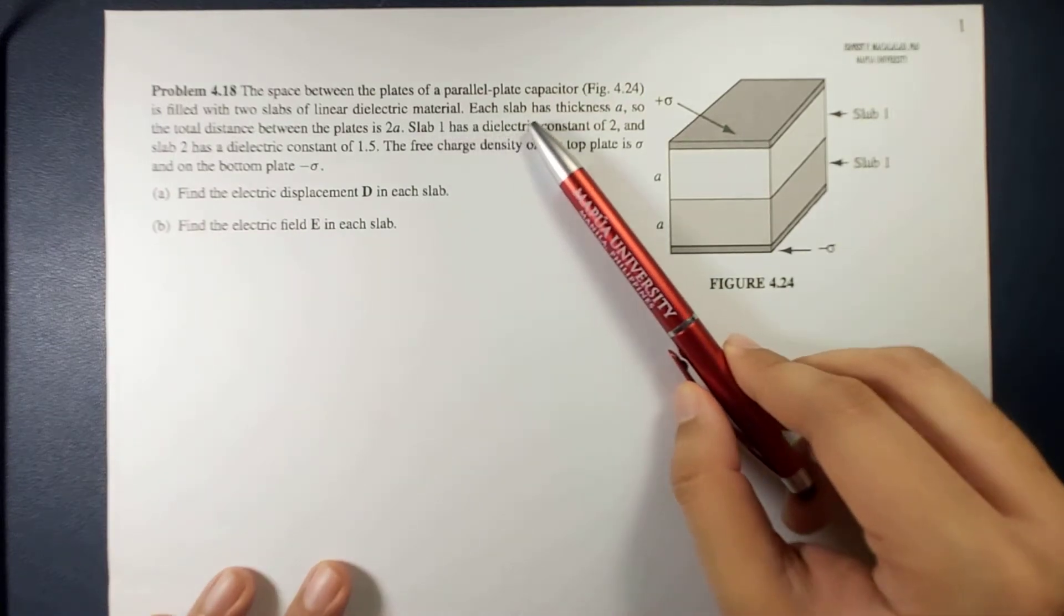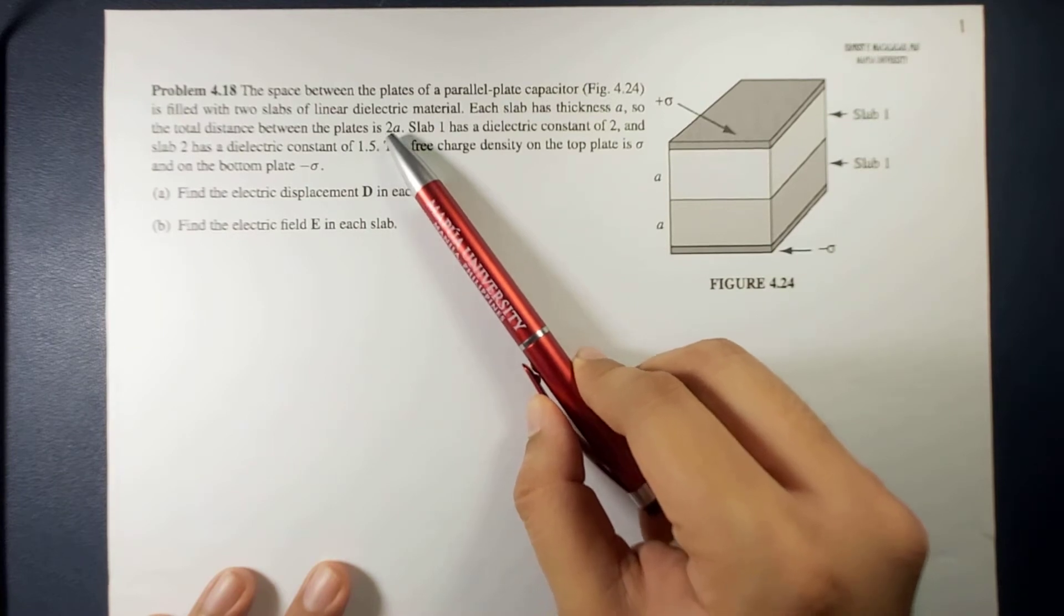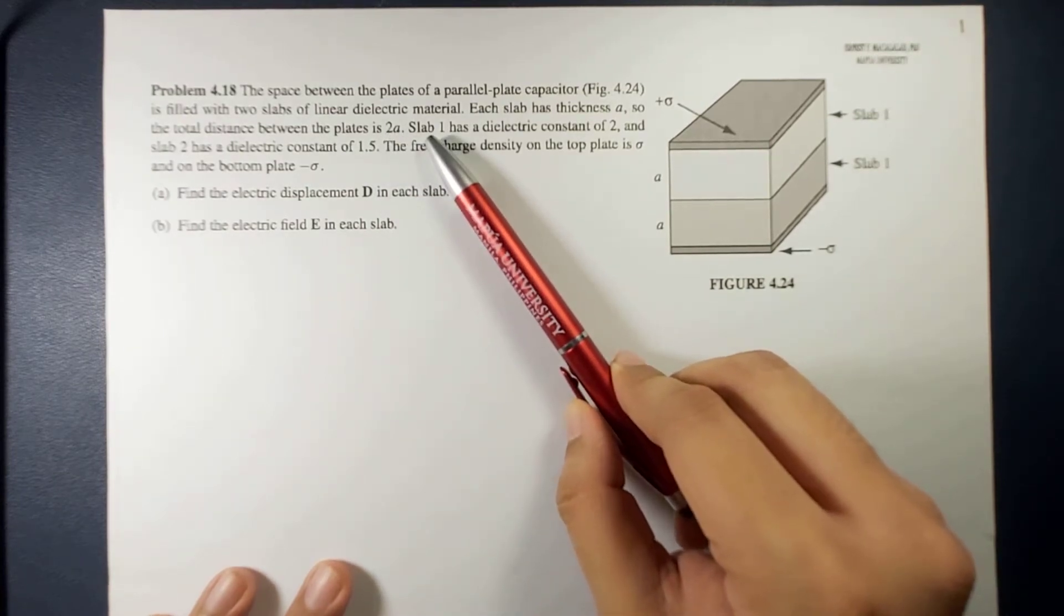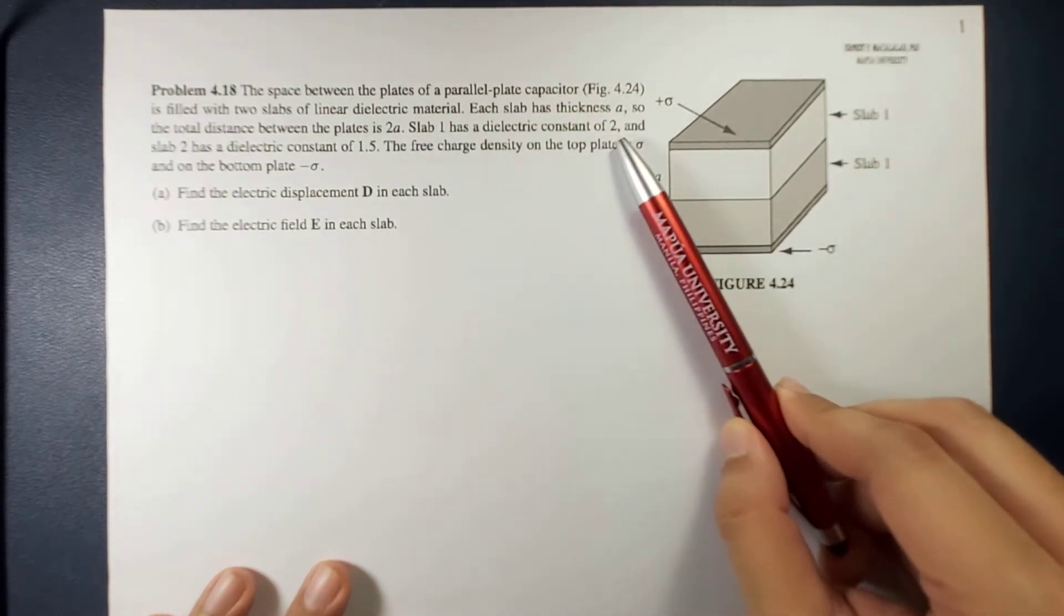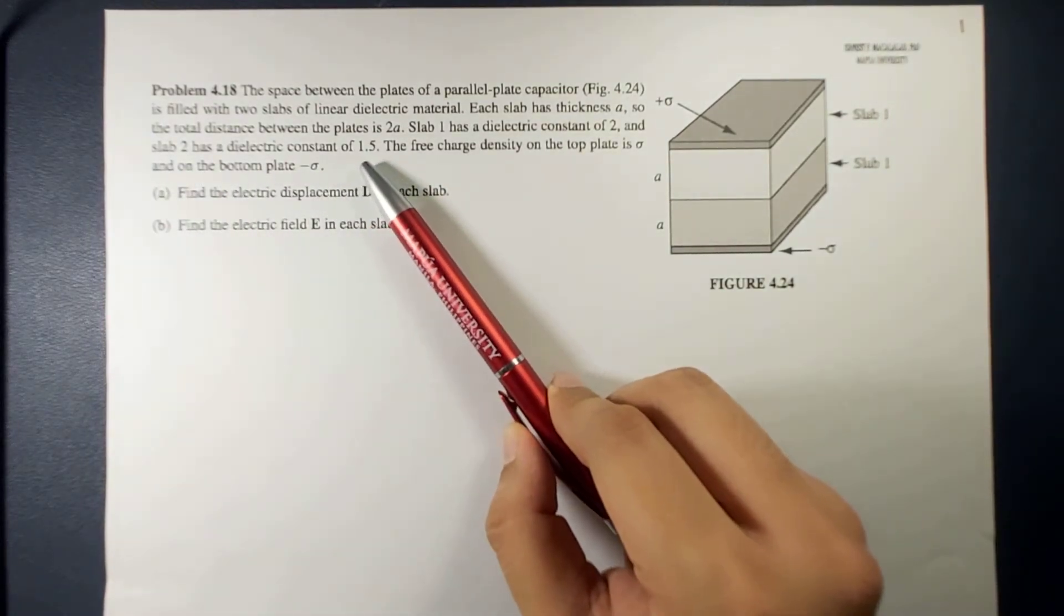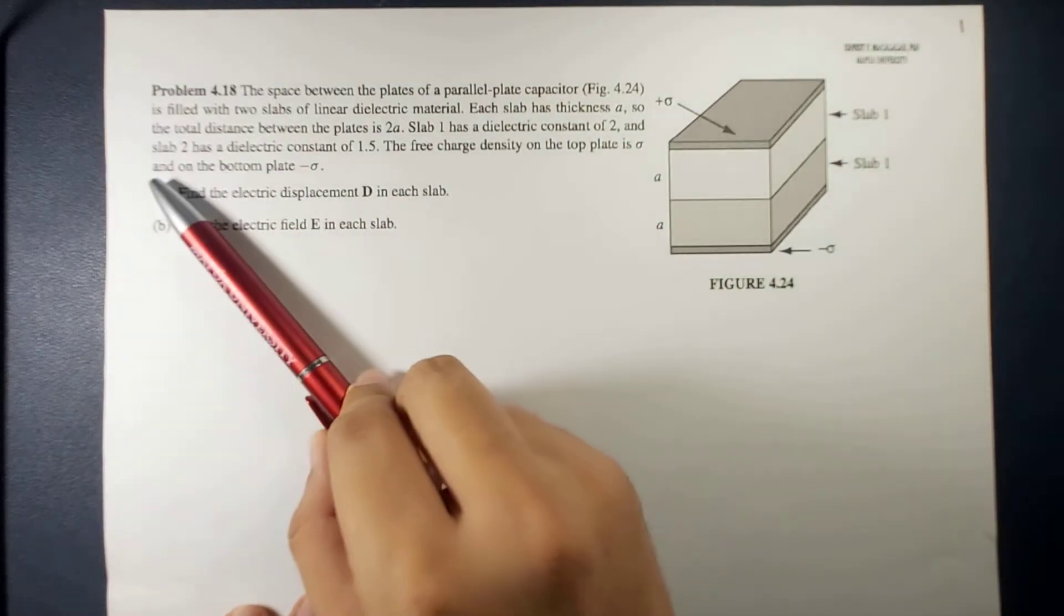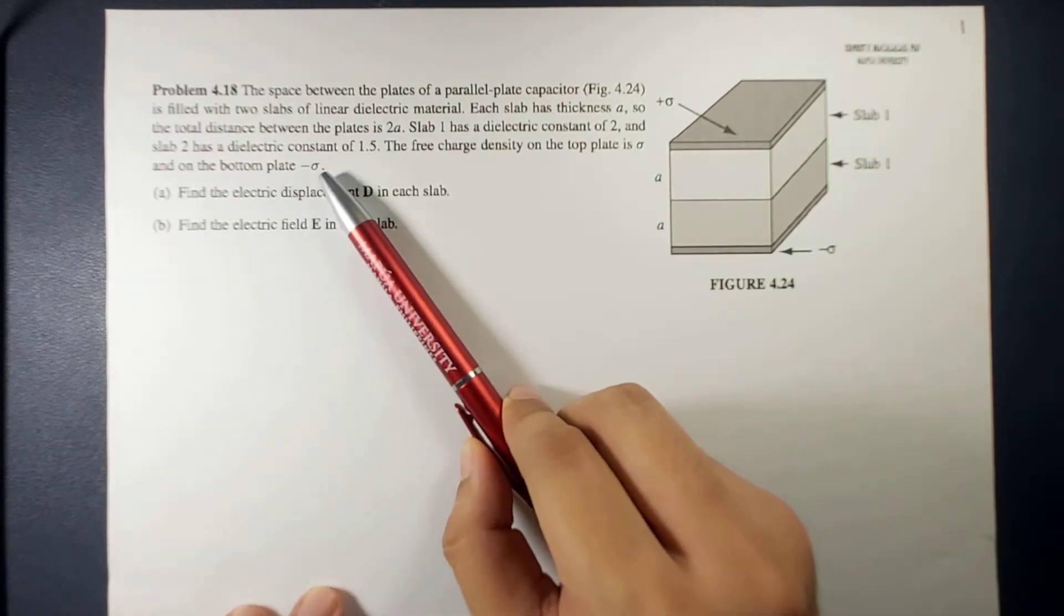Each slab has thickness a, so that the total distance between the plates is 2a. Slab 1 has a dielectric constant of 2, and slab 2 has a dielectric constant of 1.5. The free charge density on the top plate is sigma, and on the bottom plate is minus sigma.